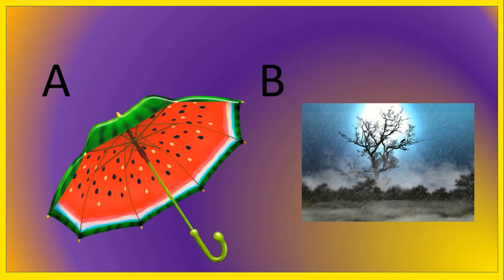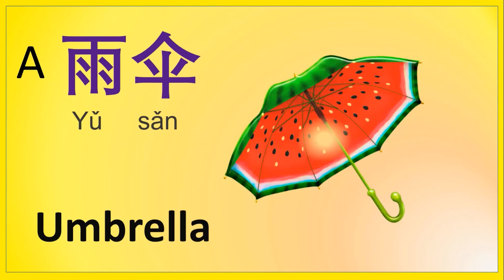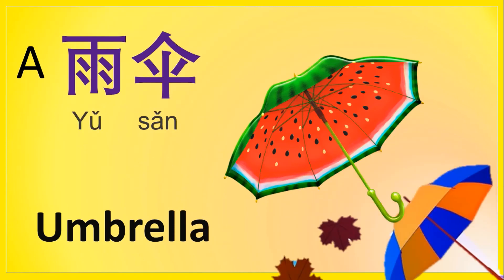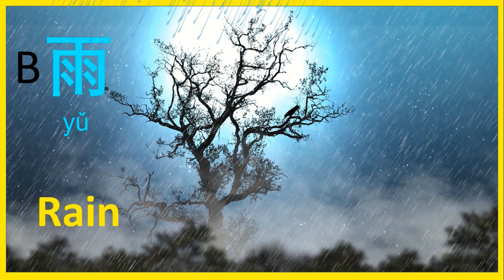哪一个是雨伞? 彩虹, 彩虹. It's A — 雨伞, umbrella. And B is 雨, rain. 下雨了 — it's raining.